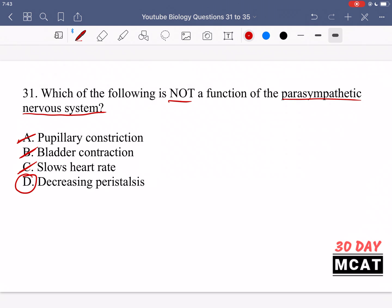The parasympathetic nervous system on the other hand would be responsible for increasing peristalsis, meaning increasing movement in the intestines and an increase in digestion. So this is the opposite of what the parasympathetic nervous system would do. So it's the correct answer for question 31.